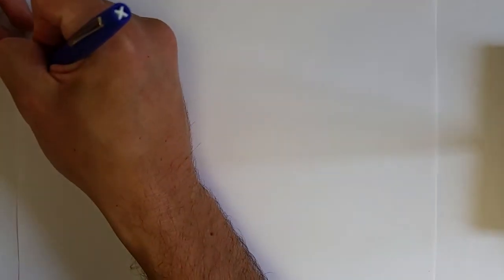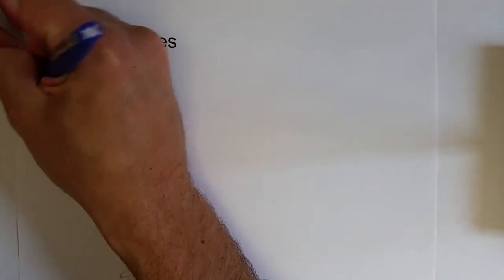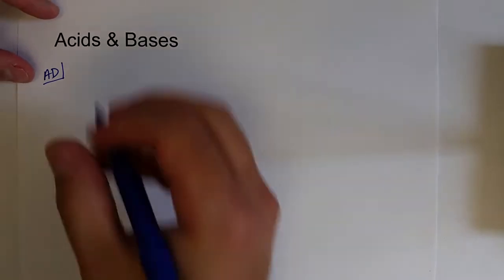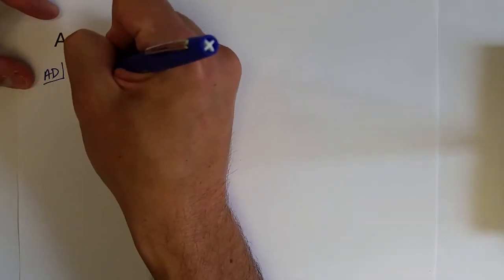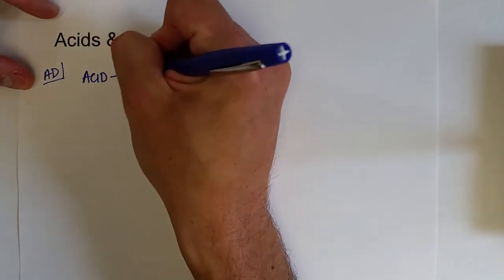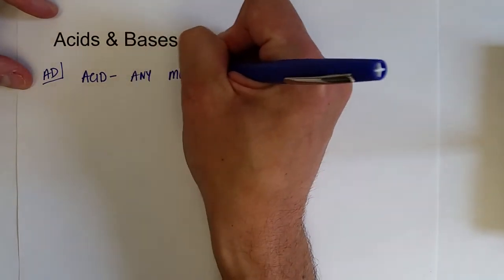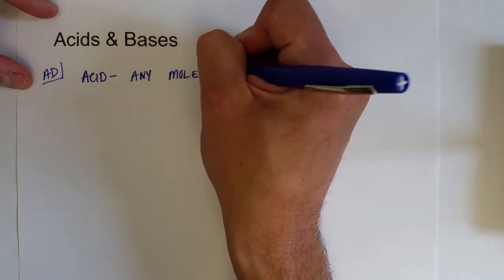Next we'll turn our attention to acids and bases. For acids and bases there are a couple of different definitions — we'll focus on two. One is known as the Arrhenius definition of acids, which states that an acid is any substance or any molecule that produces an H-plus ion in solution.